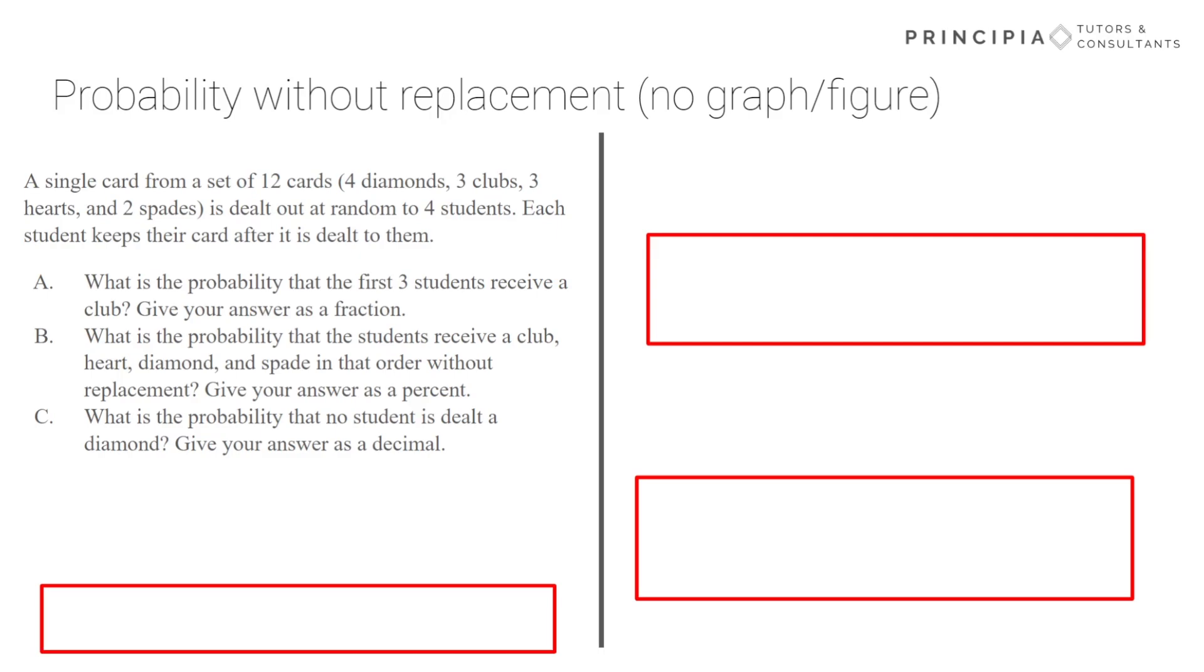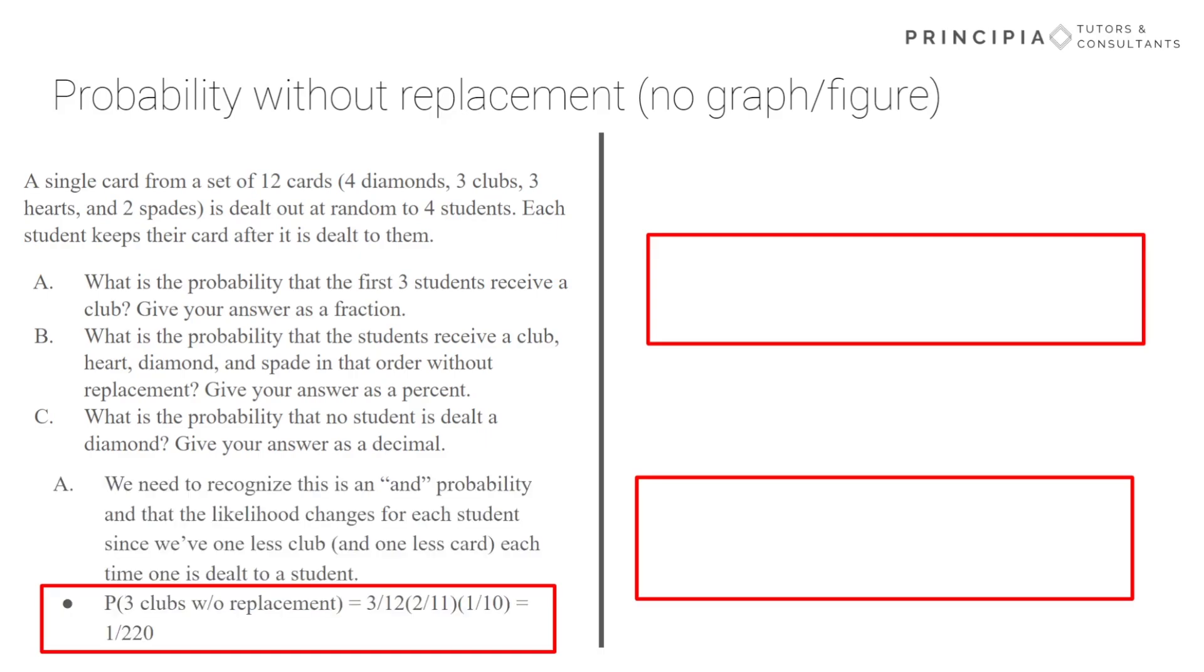All right, so now first three students receiving a club. Since after drawing a card, the student will keep it and it's not replaced, we have to account for that in our probabilities. So the club on the first draw is most certainly still three out of 12. However, once that club is drawn, we would only have two clubs left and a total of 11 cards remaining. And so it would continue until we're out of clubs. So the first three students receiving a club would be three-twelfths multiplied by two-elevenths multiplied by one-tenth. We end up with a one in 220 likelihood. Since it's asking for our answer as a fraction, it's good to go.